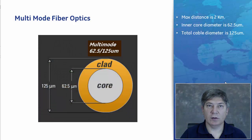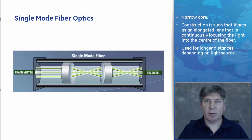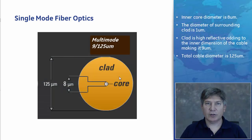Due to reflection off the walls of the tube, the light source attenuates, limiting multi-mode fiber to a range of 2 kilometers. The multi-mode cable inner core has a diameter of 62.5 micrometers with a total diameter of 125 micrometers. The second mode is single mode, which has a narrow core that acts as an elongated lens, continuously focusing the light into the center of the fiber. Based on this construction, there is very little attenuation, and distances of up to 100 kilometers can be attained. The single mode cable inner core has a diameter of 8 micrometers, with a surrounding clad diameter increasing it to 9 micrometers, and a total diameter of 125 micrometers — designated as 9/125 micrometers.